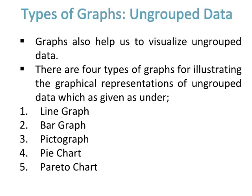Types of graphs for ungrouped data. Graphs also help us to visualize ungrouped data. There are five types: number one, line graph; number two, bar graph; number three, pictograph; number four, pie chart; number five, Pareto chart.